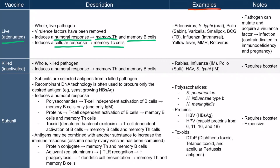Here are some high-yield examples of live vaccines: adenovirus, Salmonella typhi oral form, the polio vaccine specifically the Sabin form, the varicella vaccine, smallpox vaccine, BCG vaccine which is the TB vaccine, influenza vaccine specifically the intranasal form, yellow fever vaccine, measles/mumps/rubella MMR vaccine, and the rotavirus vaccine. Knowing that each of these vaccines includes a live virus is very high yield.